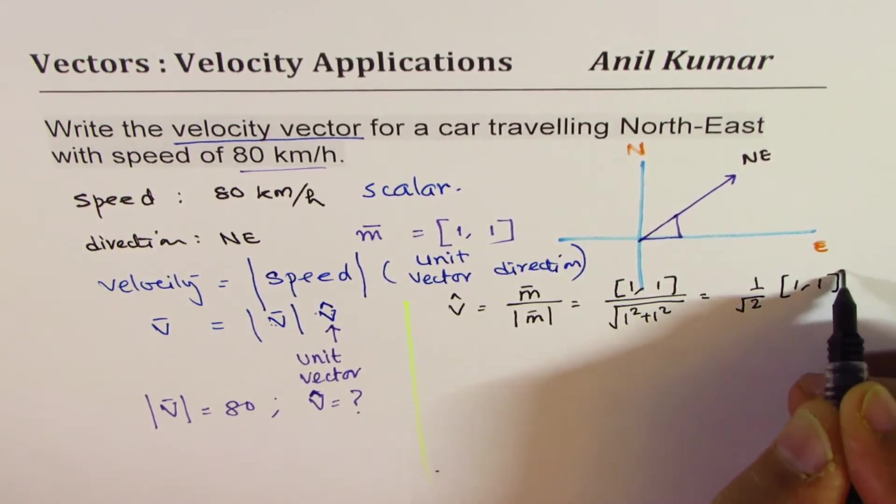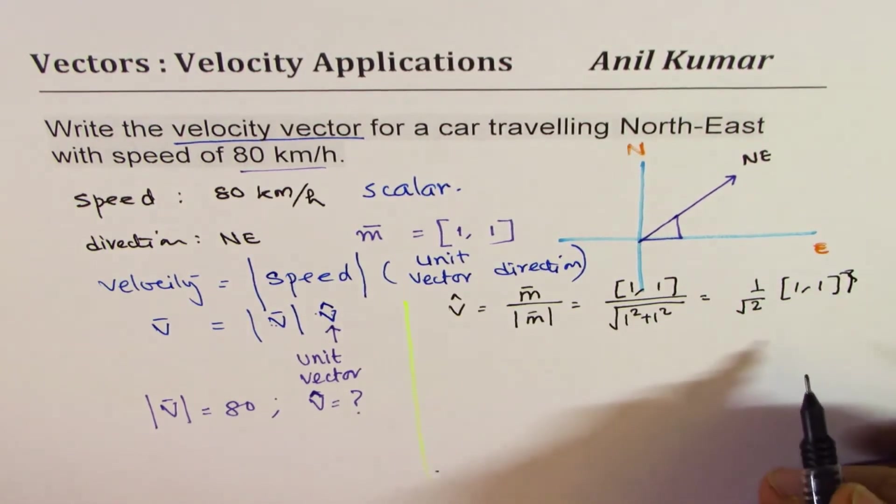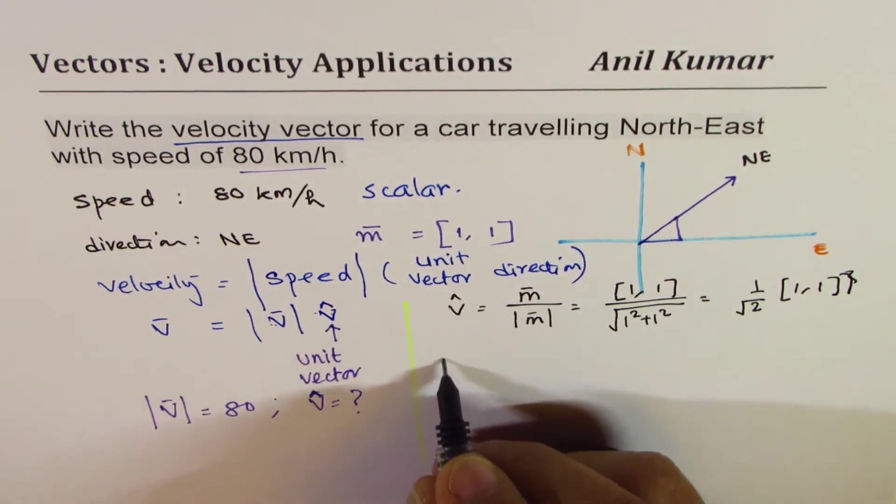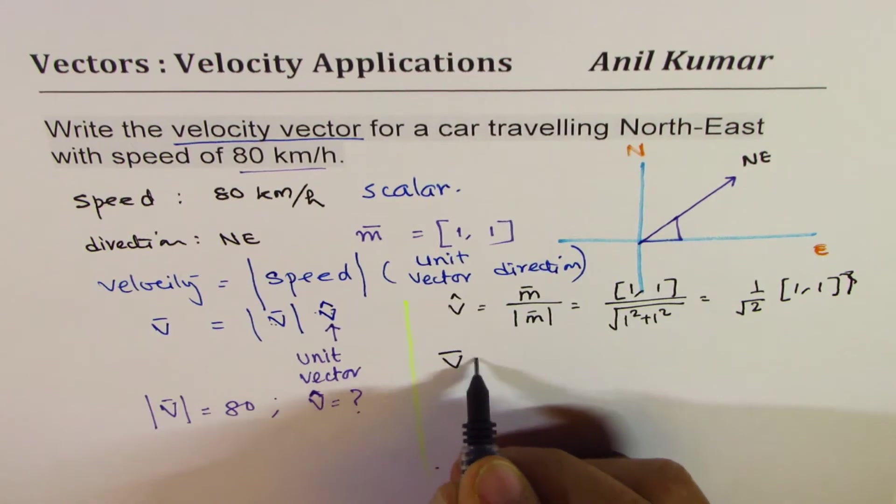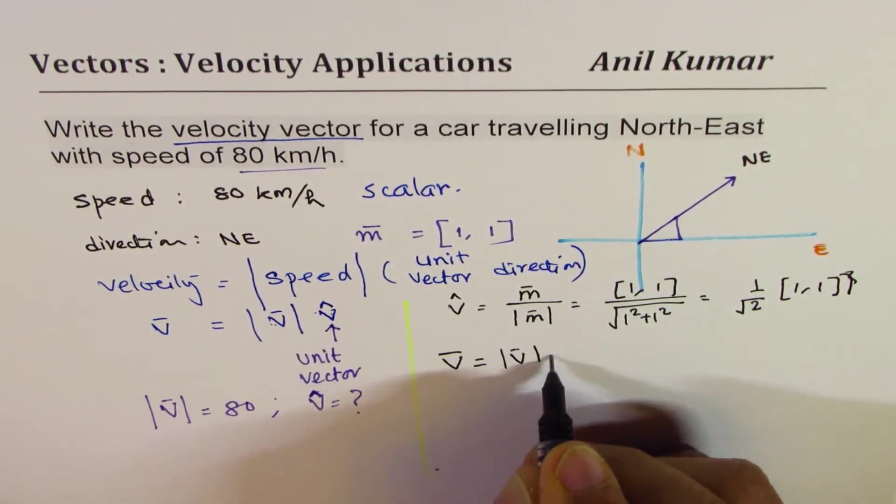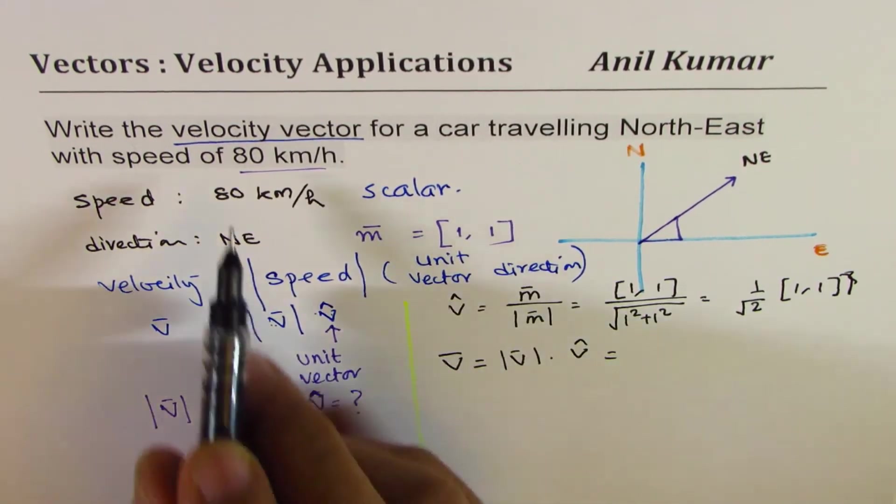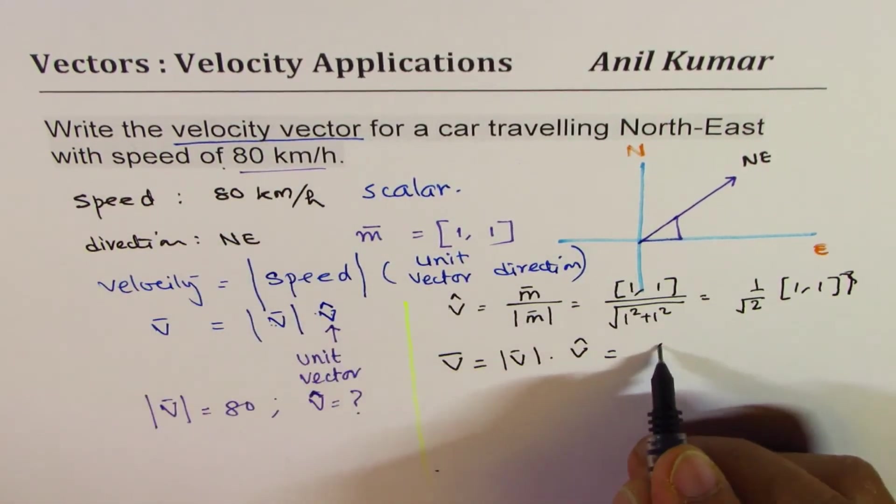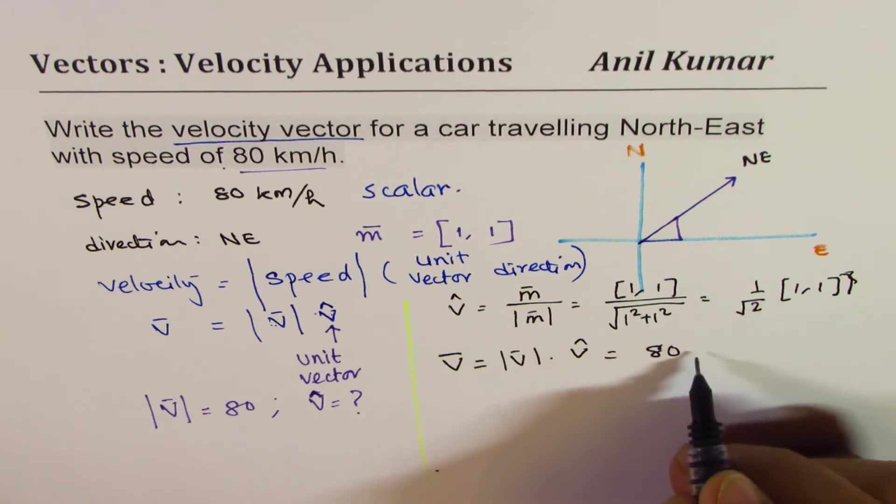And therefore I could write my velocity vector as the magnitude which is speed times unit vector. The magnitude is given as 80 kilometers per hour, so it is 80 and then we have 1 over square root 2, [1,1].